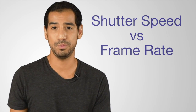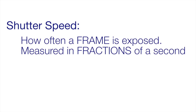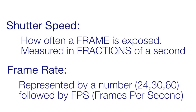I want to clear up the difference between a camera's shutter speed and a frame rate. These two terms get thrown around as the same thing, when in reality they're two very different settings on your camera. Shutter speed is represented by a fraction like 1/100 or 1/60, while frame rate is represented by a number followed by the letters FPS — frames per second.